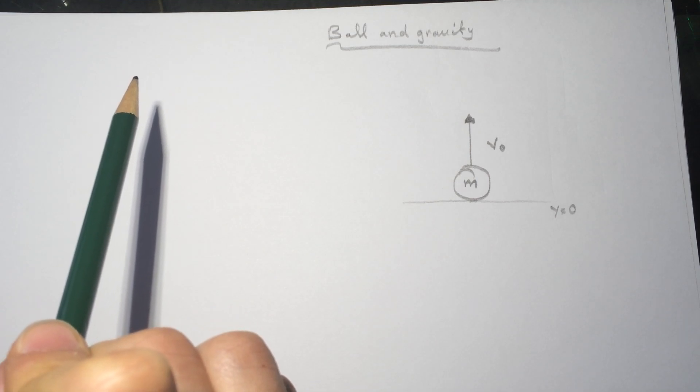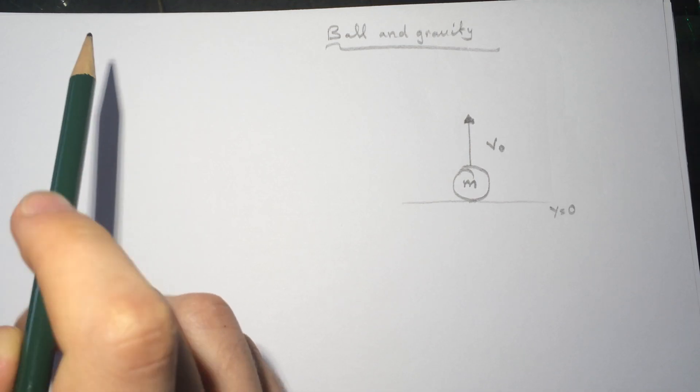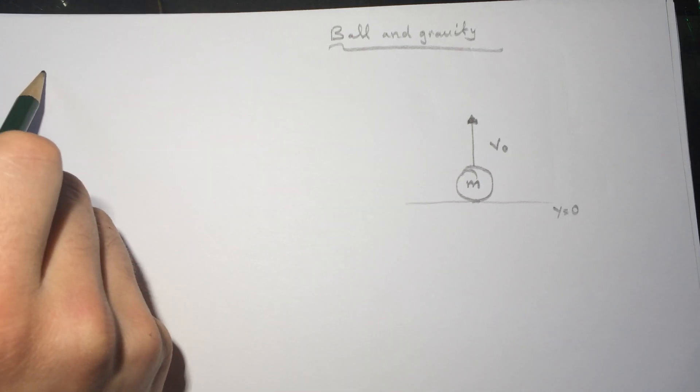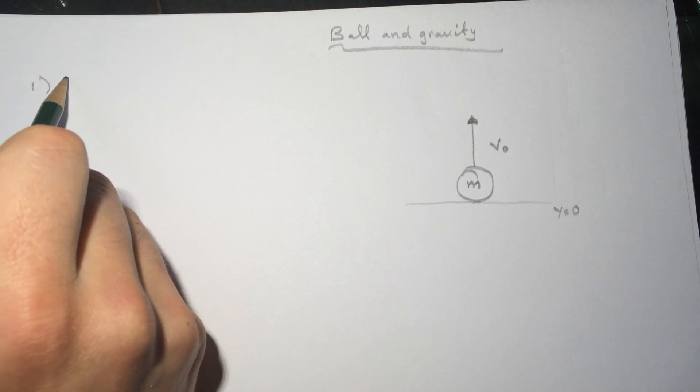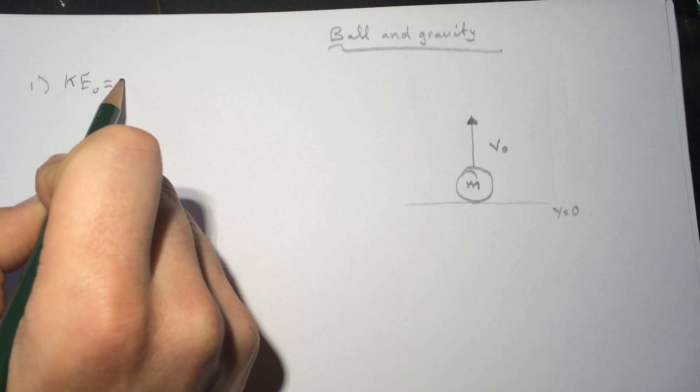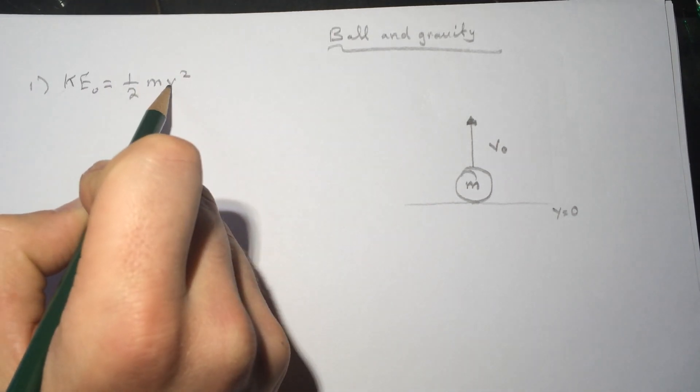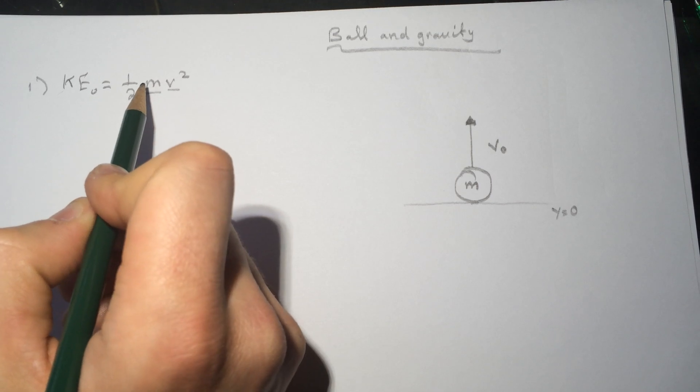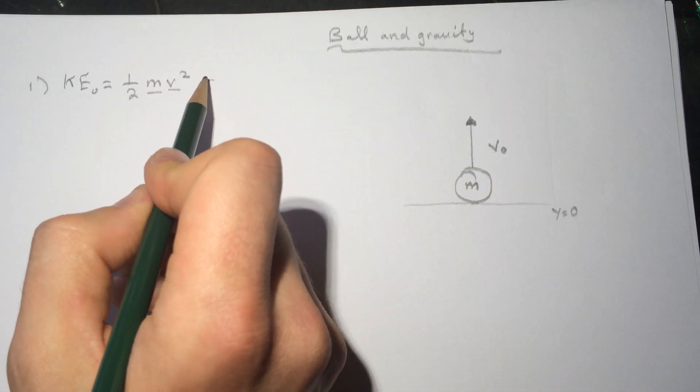speed of V₀ = 18 meters per second. The first question is asking what is the initial kinetic energy of the ball. They're asking KE initial, and kinetic energy is ½mv². We have the mass, we have the velocity, so we can get the kinetic energy.